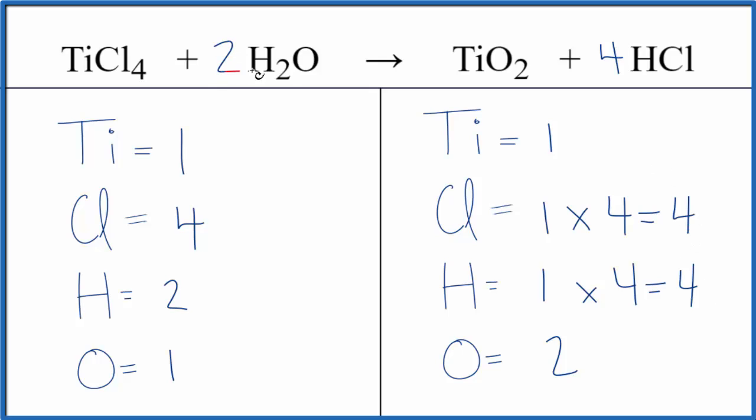If we put a 2 in front of the H2O, 2 times 2, that gives us 4, and then the 1 times the 2, that gives us 2, and we're done. This equation is balanced.